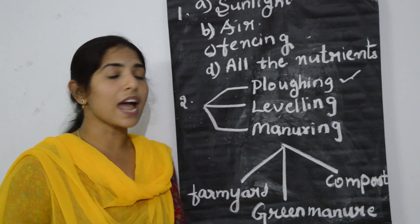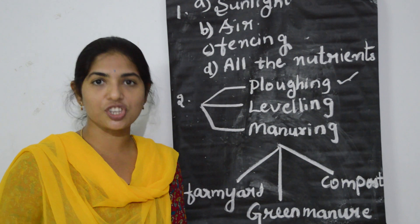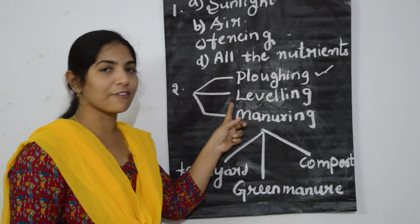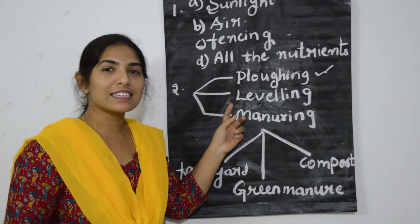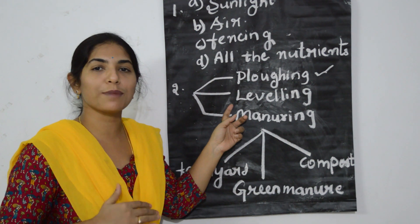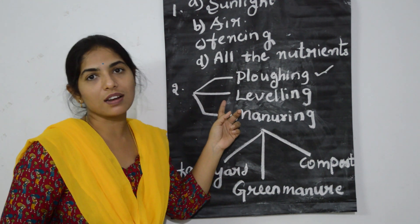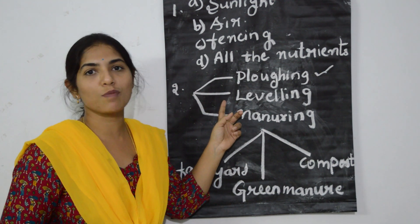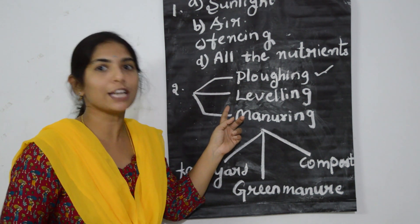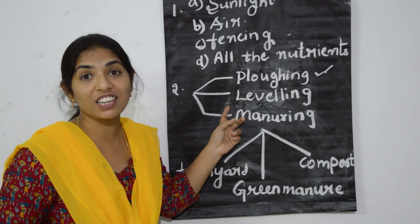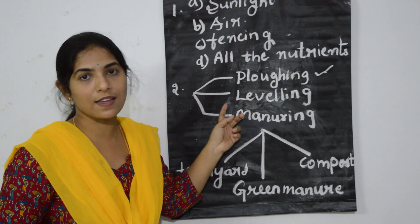The third advantage of plowing is that it also helps in proper root penetration into the soil. The second step is leveling, which is making the land even and slightly pressing the soil to prevent soil erosion. Because of leveling, bigger soil particles can be broken into smaller particles, and we can promote uniform irrigation — giving water to the field uniformly — and also prevent waterlogging conditions.